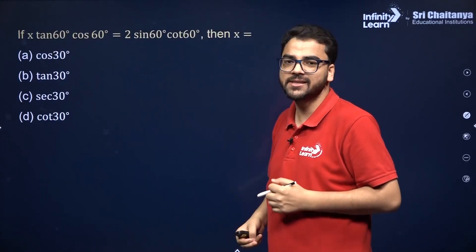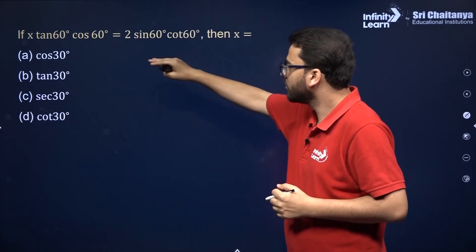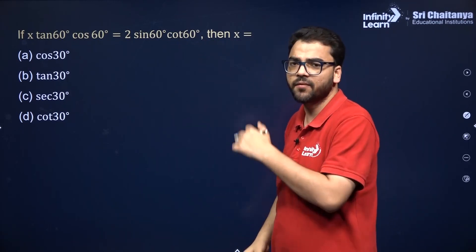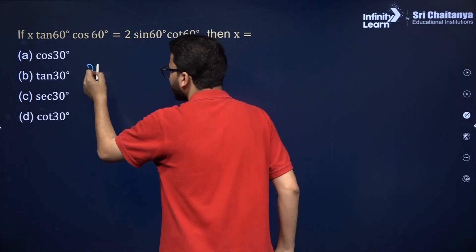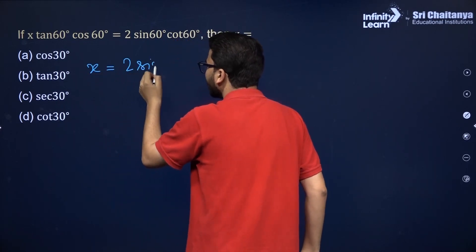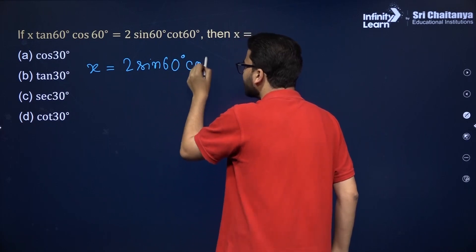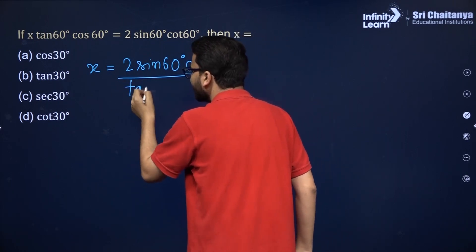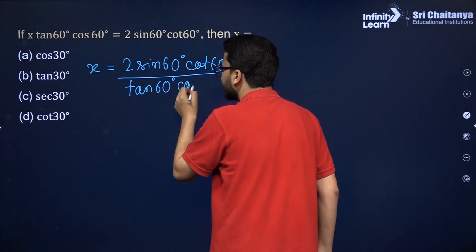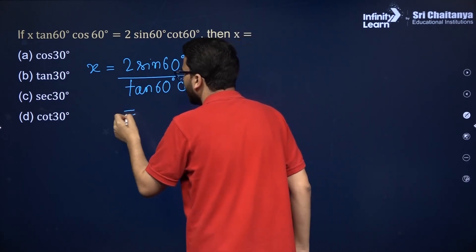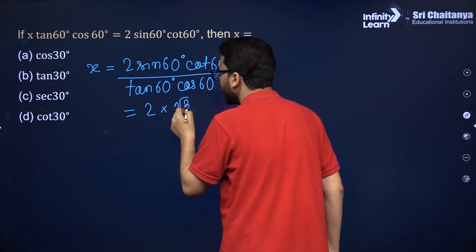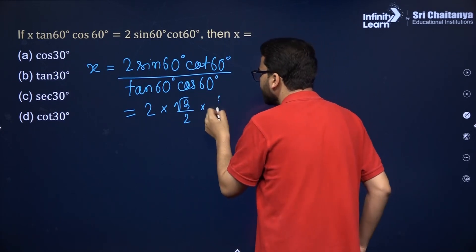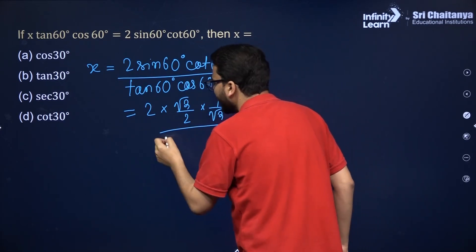Next MCQ: x·tan60·cos60 = 2·sin60·cot60. So x = 2·sin60·cot60 divided by tan60·cos60. Sin 60 is √3/2, cot 60 is 1/√3, tan 60 is √3, and cos 60 is 1/2.